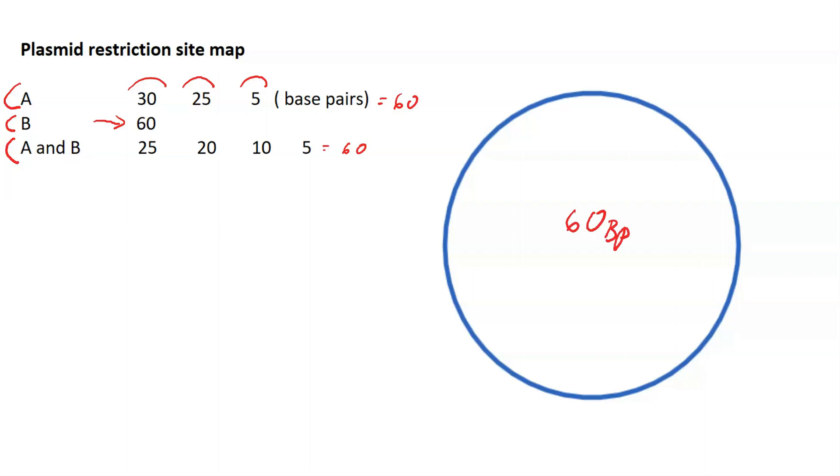The next thing you want to do to map these restriction sites is locate an enzyme that results in the highest number of fragments. When this enzyme cleaves the DNA, it gives you the greatest number of fragments. In this case, you can clearly see it's enzyme A because it gives you three fragments, versus B only gives you one.